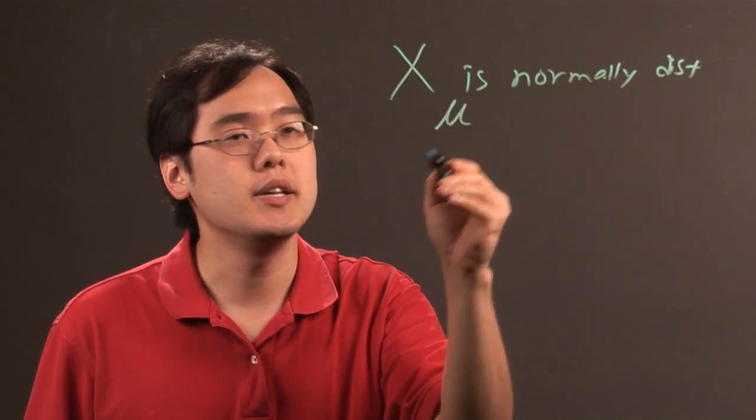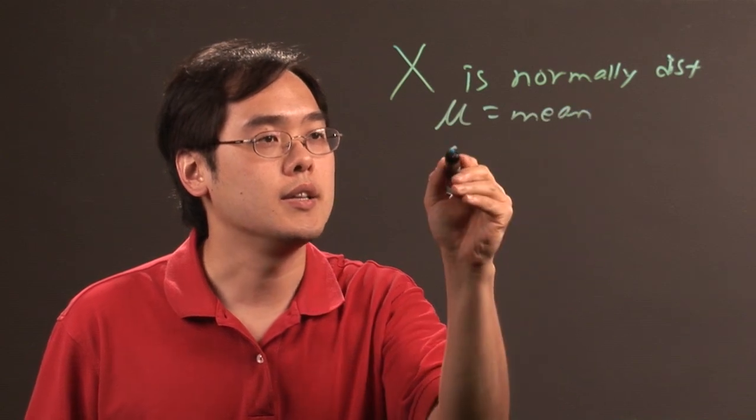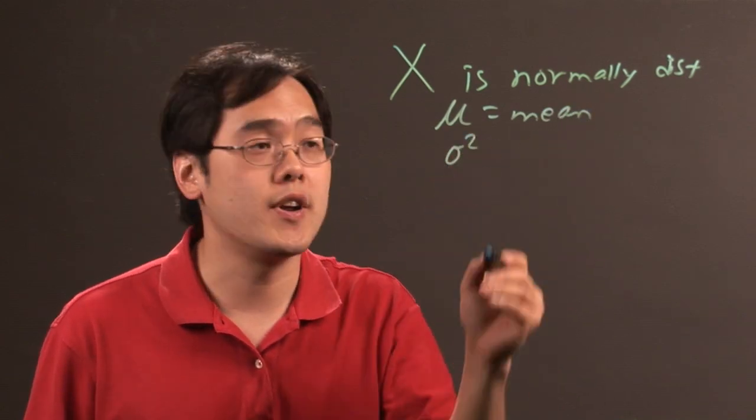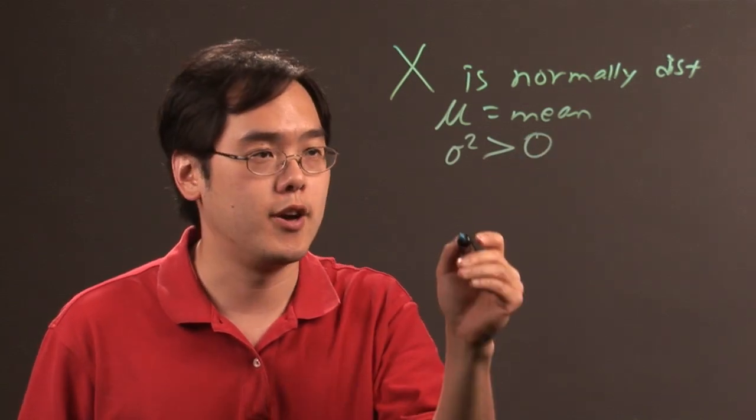and you're given the mean is mu, and sigma-squared, which is the variance, is going to be greater than zero, then here's what the theorem talks about.